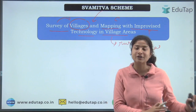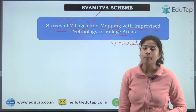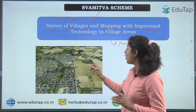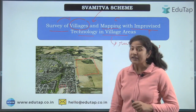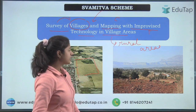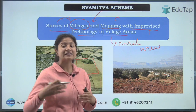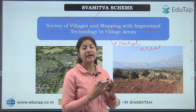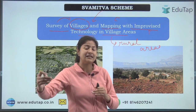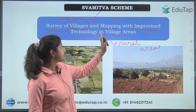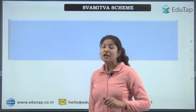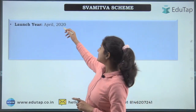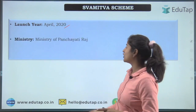The reason for this scheme is that urban areas are much better segmented into blocks, but in rural areas there is no clear separation of people's land — you cannot easily determine to what extent a person owns land. To enable better planning of rural areas and give people proper documentation of their land ownership, this scheme was introduced. The launch year of this scheme is April 2020.